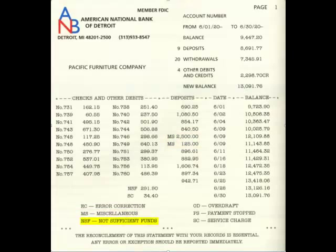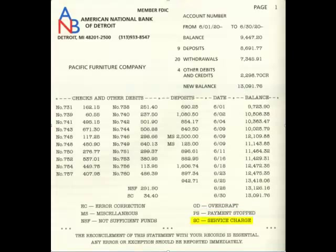The next one is an NSF check — not sufficient funds — and there is one of these on this bank statement on the 28th of June in the amount of $291.90. That NSF check is something you're going to have to deal with. On the right hand side of these codes there's an overdraft code OD — no OD appears on this statement so we don't have to worry about overdraft charges. There are no stop payments (PS). And then the very last one is a service charge SC, and on June 30th there was a service charge of $34.40.